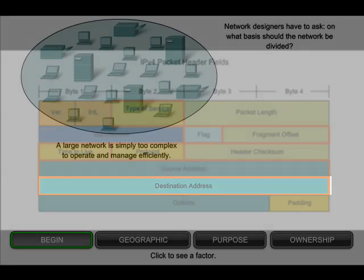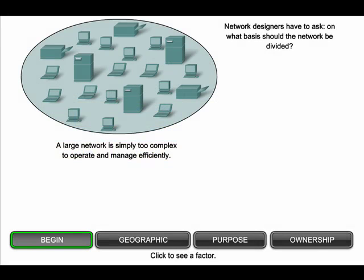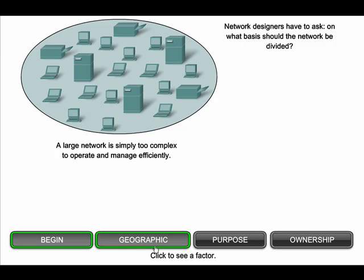One of the major roles of the network layer is to provide a mechanism for giving a unique address to each host. As the number of hosts on the network grows, more planning is required to manage and address the network. Rather than having all hosts everywhere connected as one vast global network, it is more practical and manageable to group hosts into specific networks. Networks can be grouped based on factors that include geographic location, purpose, and ownership. Grouping hosts at the same location, such as each building on a campus or each floor of a multi-level building, into separate networks can improve network management and operation, and would be an example of grouping by geographic location.